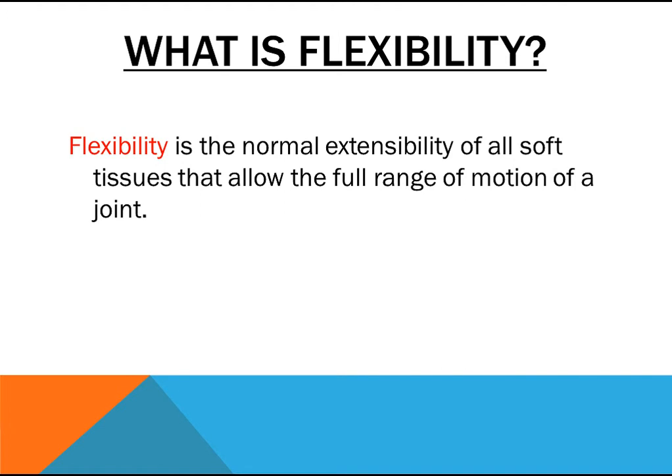Soft tissues are everything that's basically our muscles, and if we cannot move in full range of motion that means we have muscle imbalances, and we need to make corrections to those muscle imbalances. Because if we have muscle imbalances, it will actually cause us to have injuries. So flexibility is very important — moving your body in full range of motion will increase your performance, and if you're not able to move in full range of motion you're going to have those muscle imbalances and move in improper movement patterns, which will cause injuries.